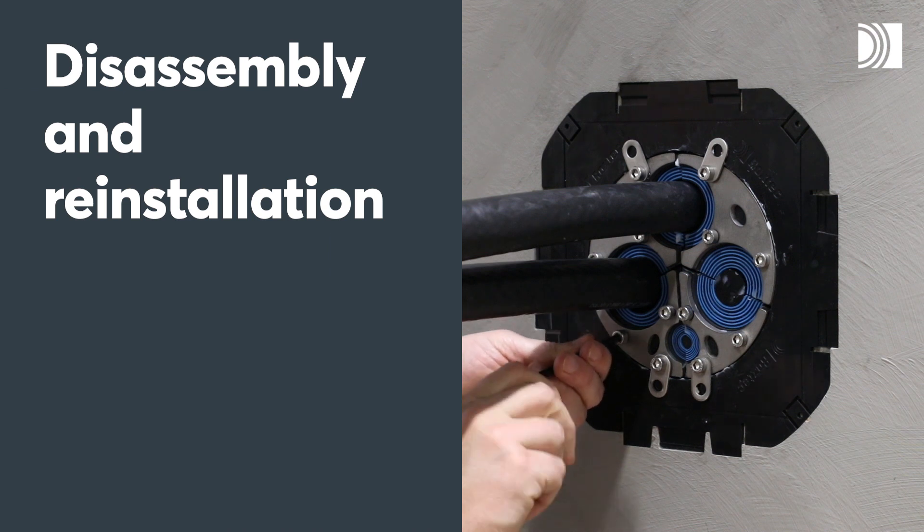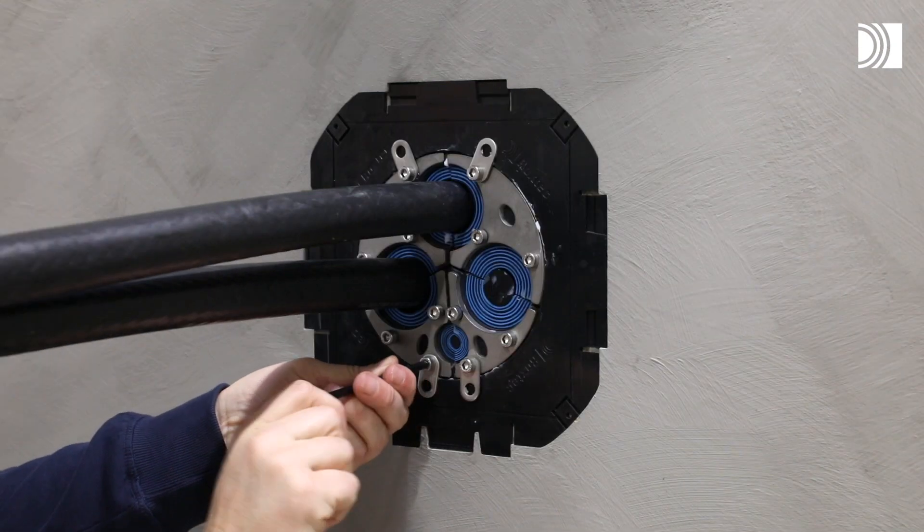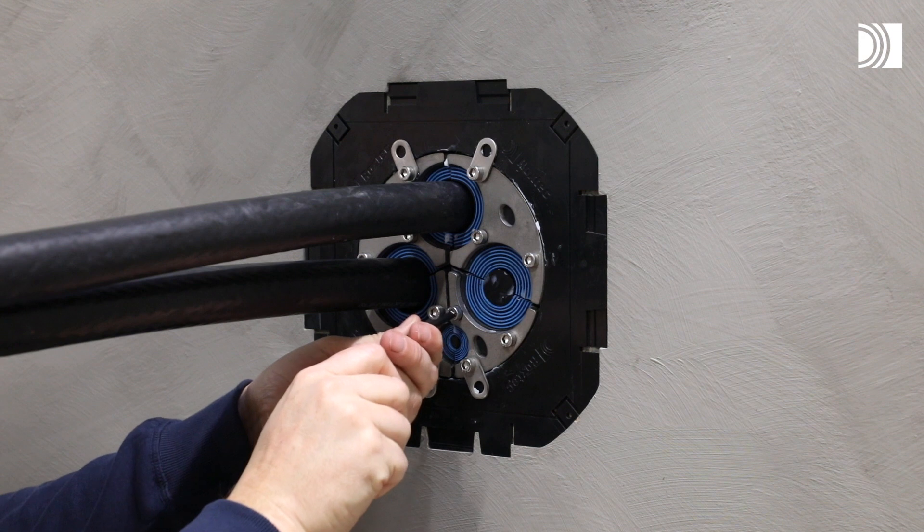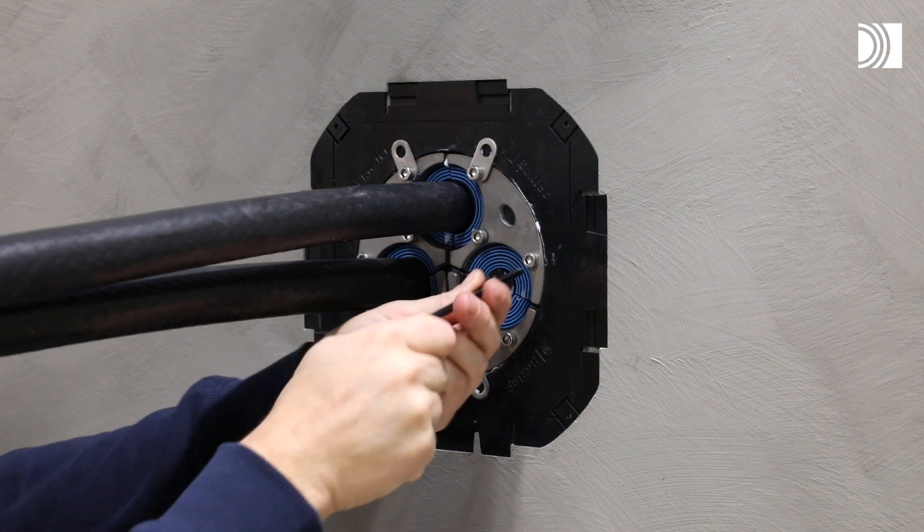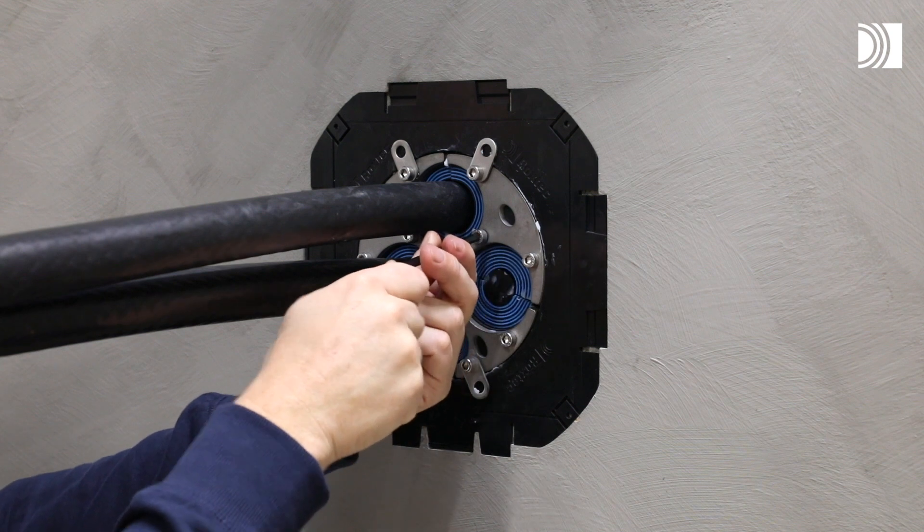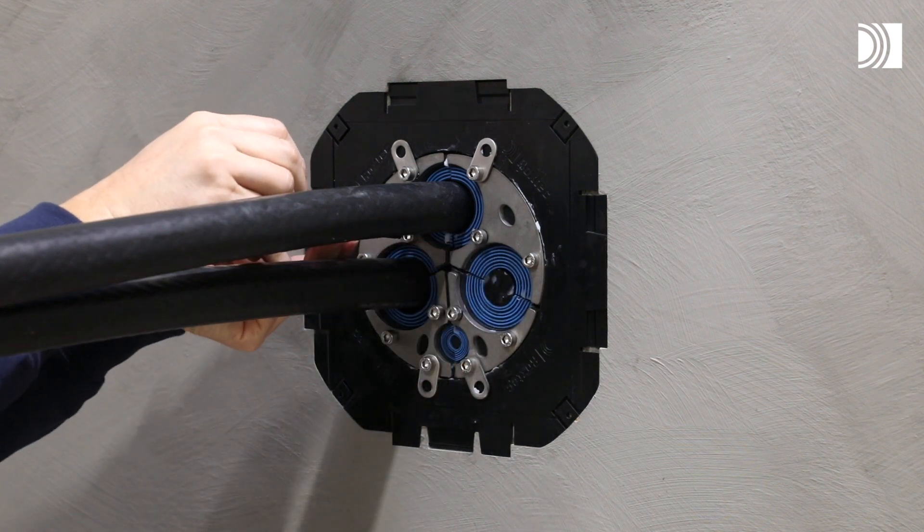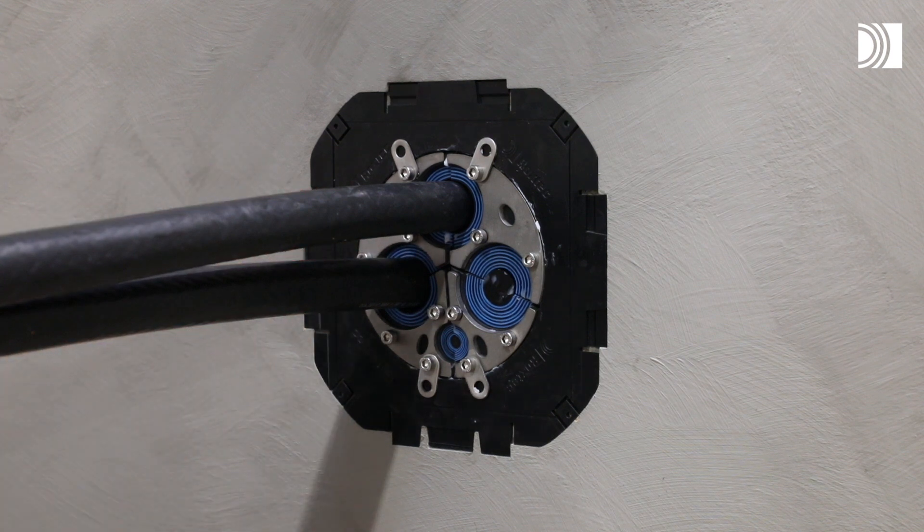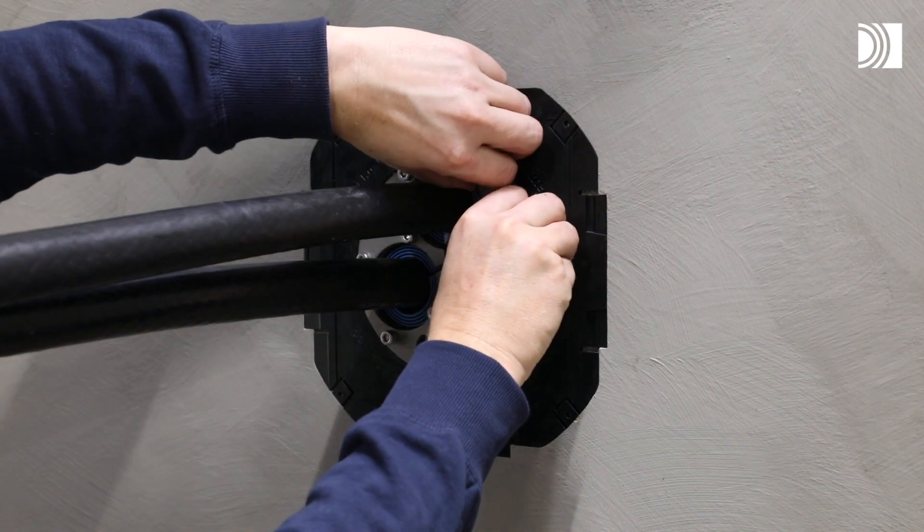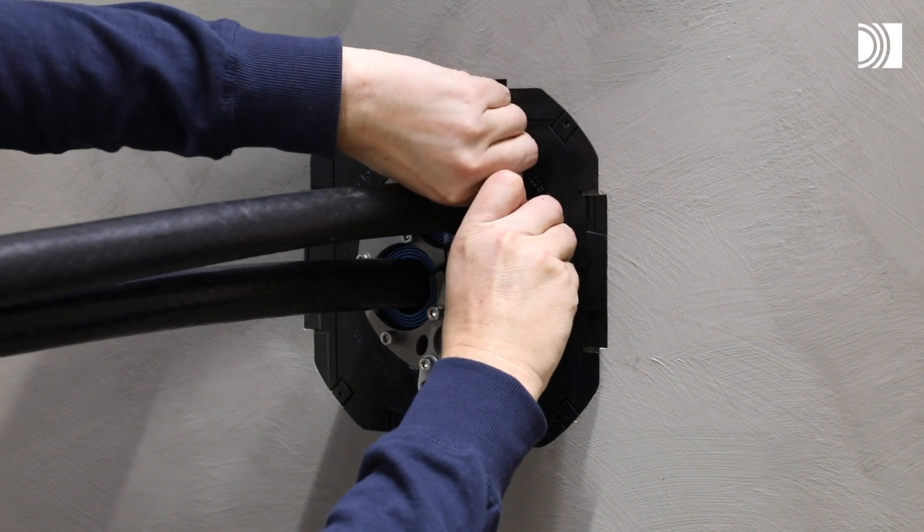Disassembly and reinstallation. Untighten the screws crosswise in small steps. Make sure the screws are completely loose. Remove the seal parts needed.